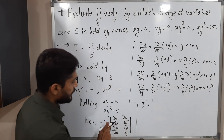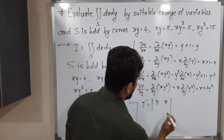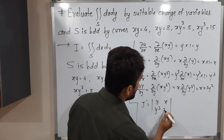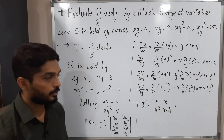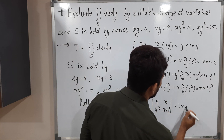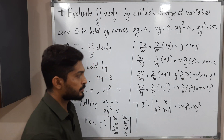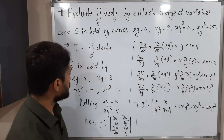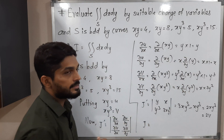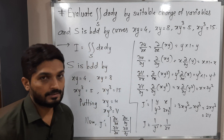Now let us find J'. The determinant has entries y, x, y³, 3xy². Solving: product of the main diagonal terms is y · 3xy² = 3xy³, and product of the other diagonal is x · y³ = xy³. So J' = 3xy³ − xy³ = 2xy³. Since xy³ = v, we have J' = 2v. Therefore J = 1/J' = 1/(2v).